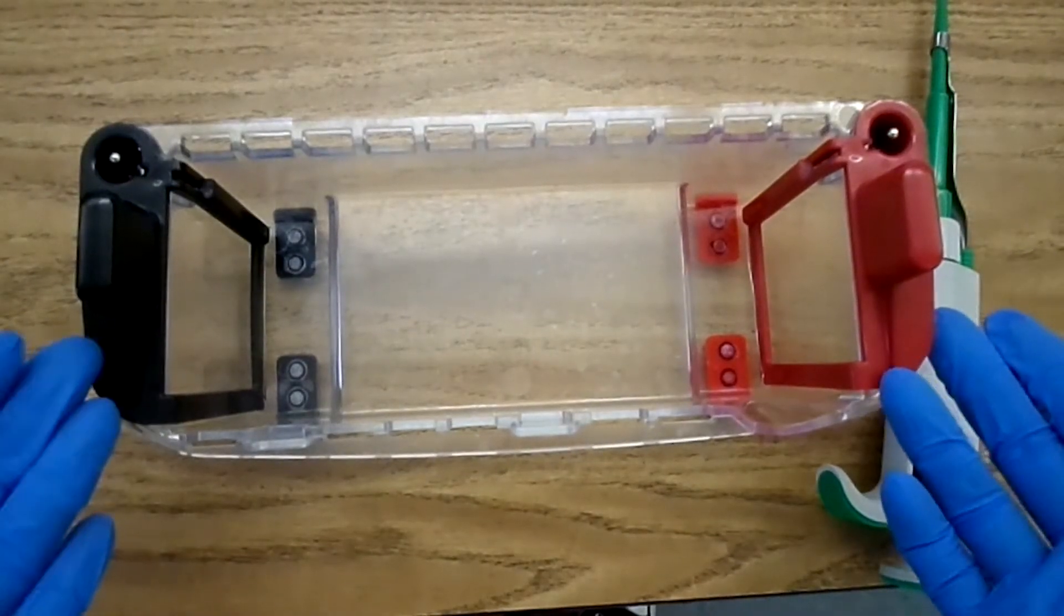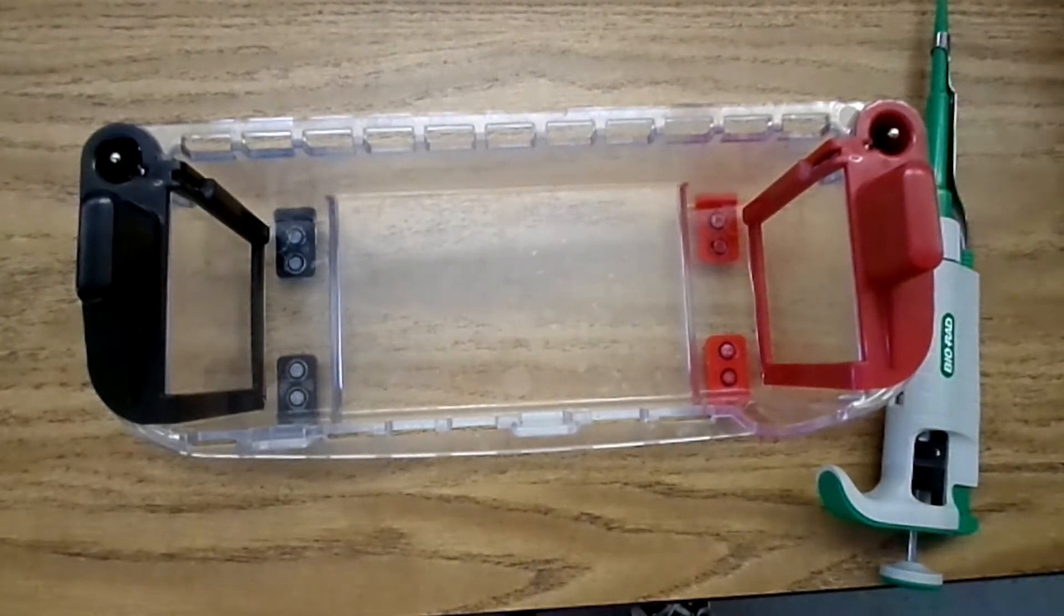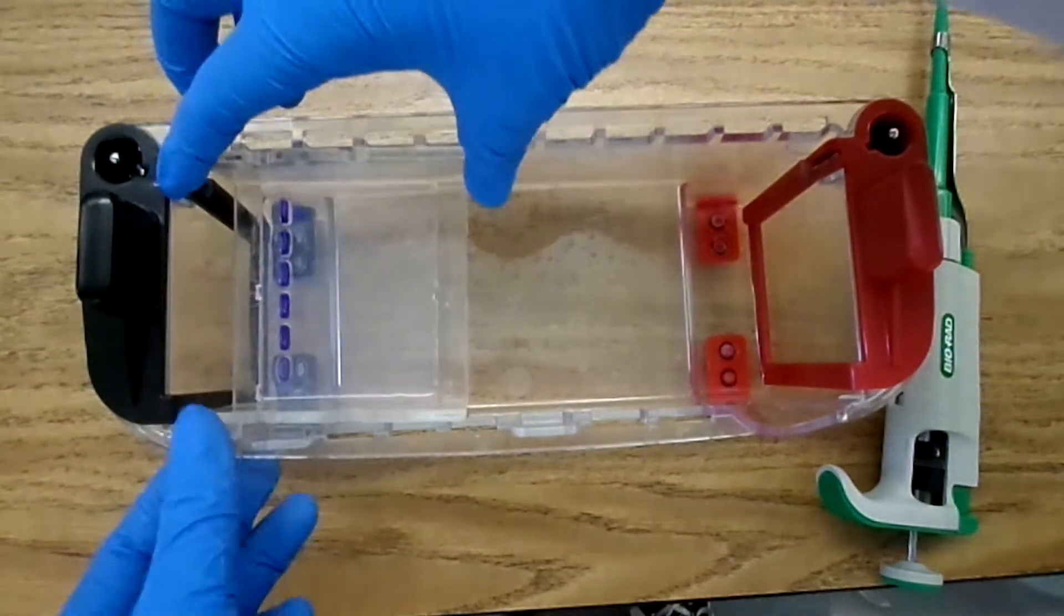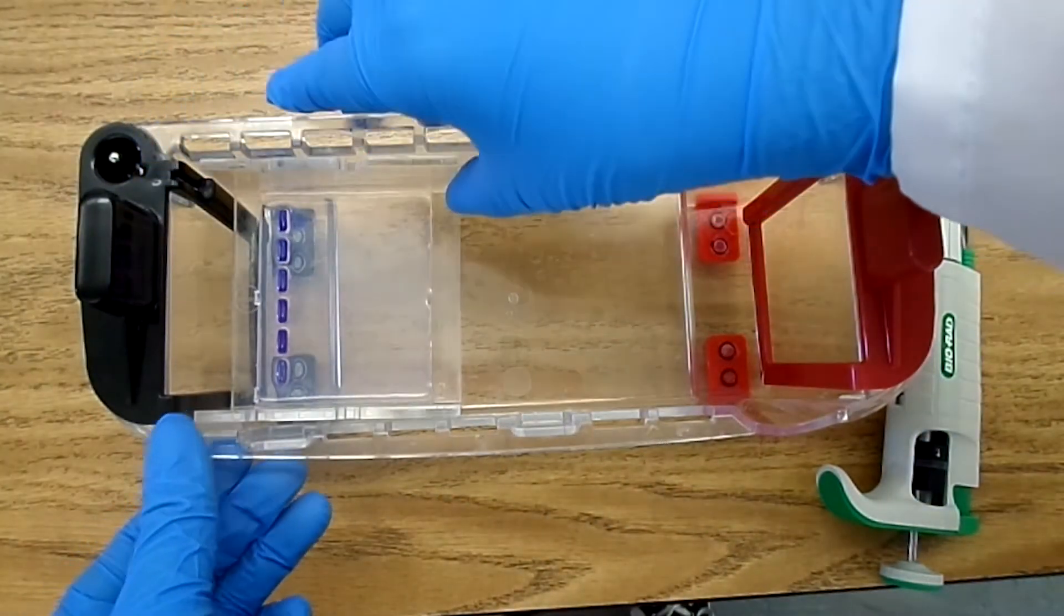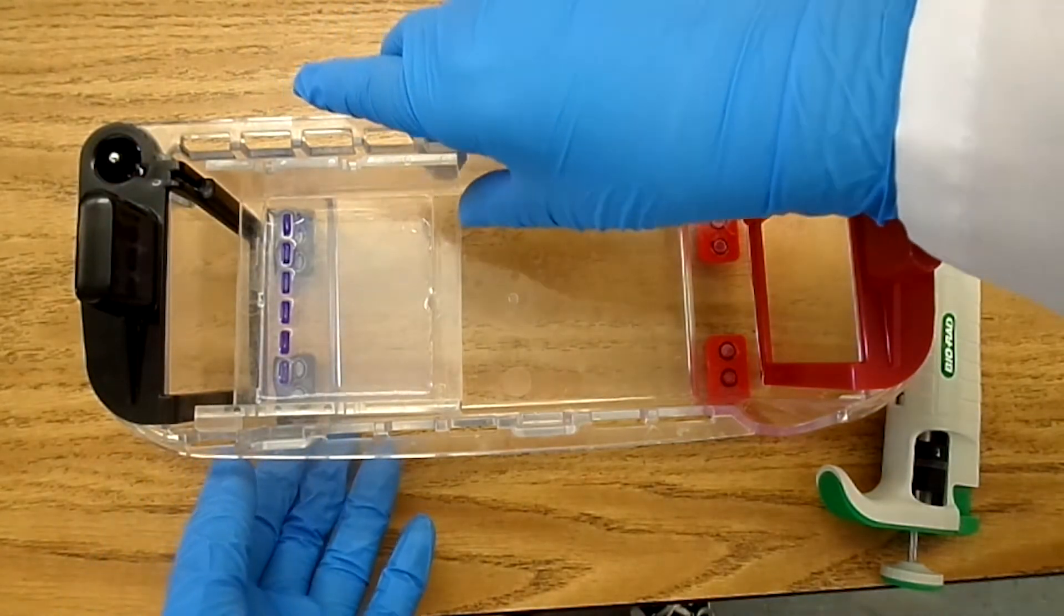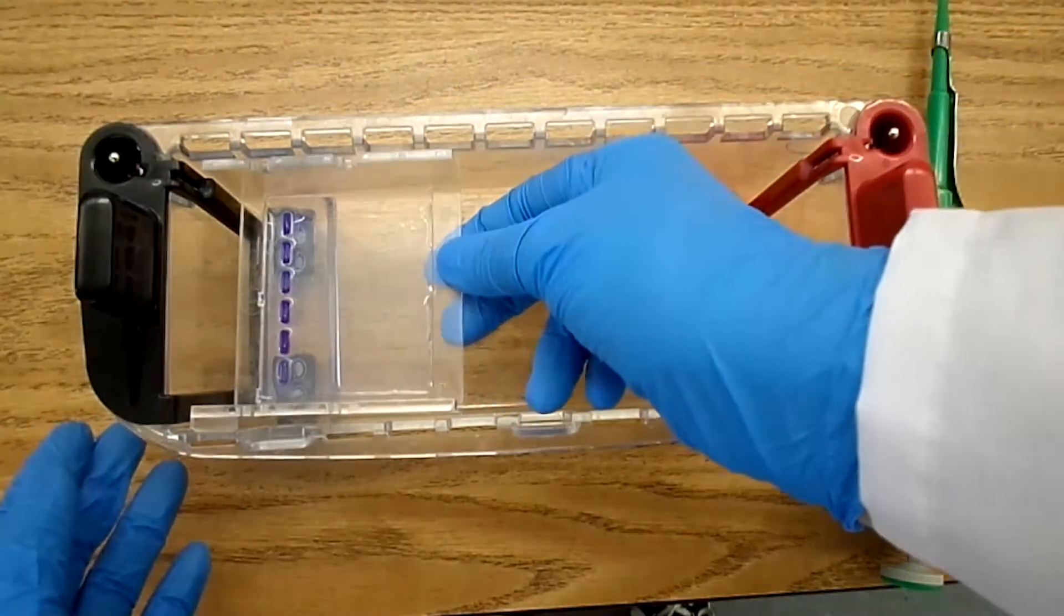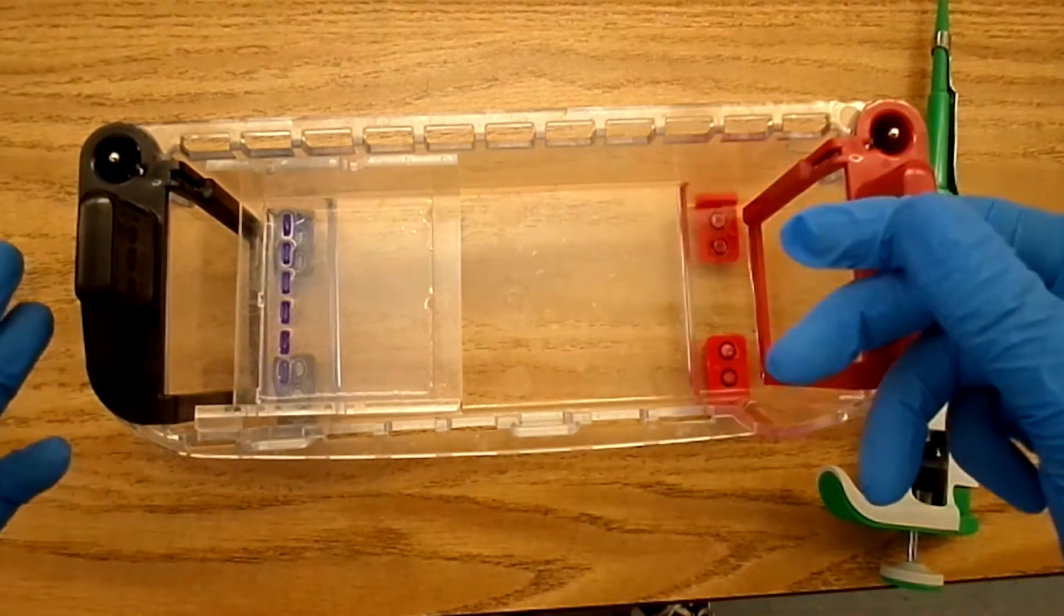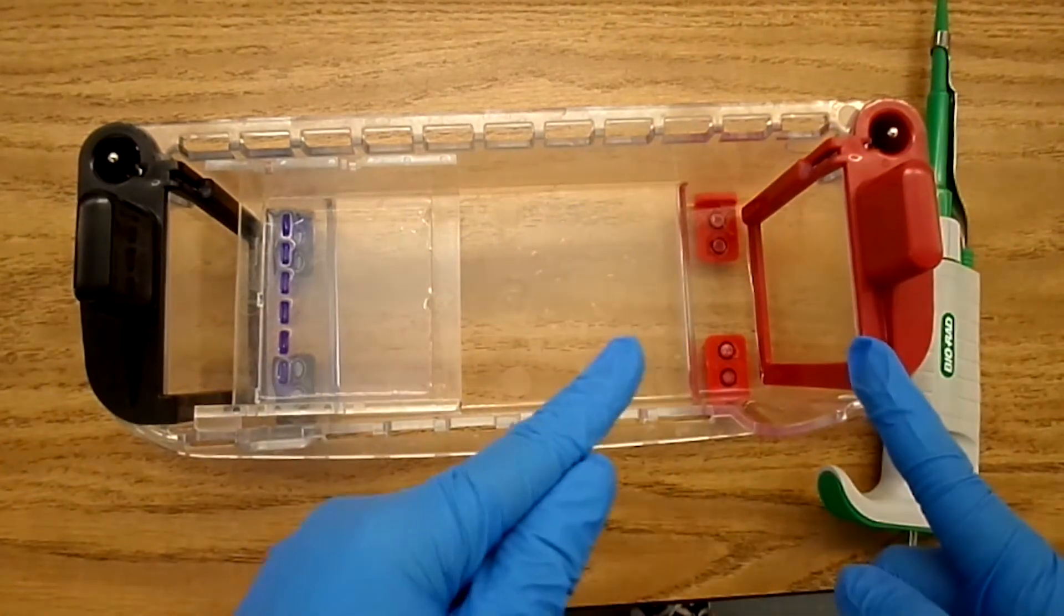This is our gel electrophoresis chamber, and we are going to put our loaded gel right here with the wells near the negative side of the chamber. That's because our DNA has a negative charge, so when we run the electrical charge through here, the DNA will move towards the positive side.